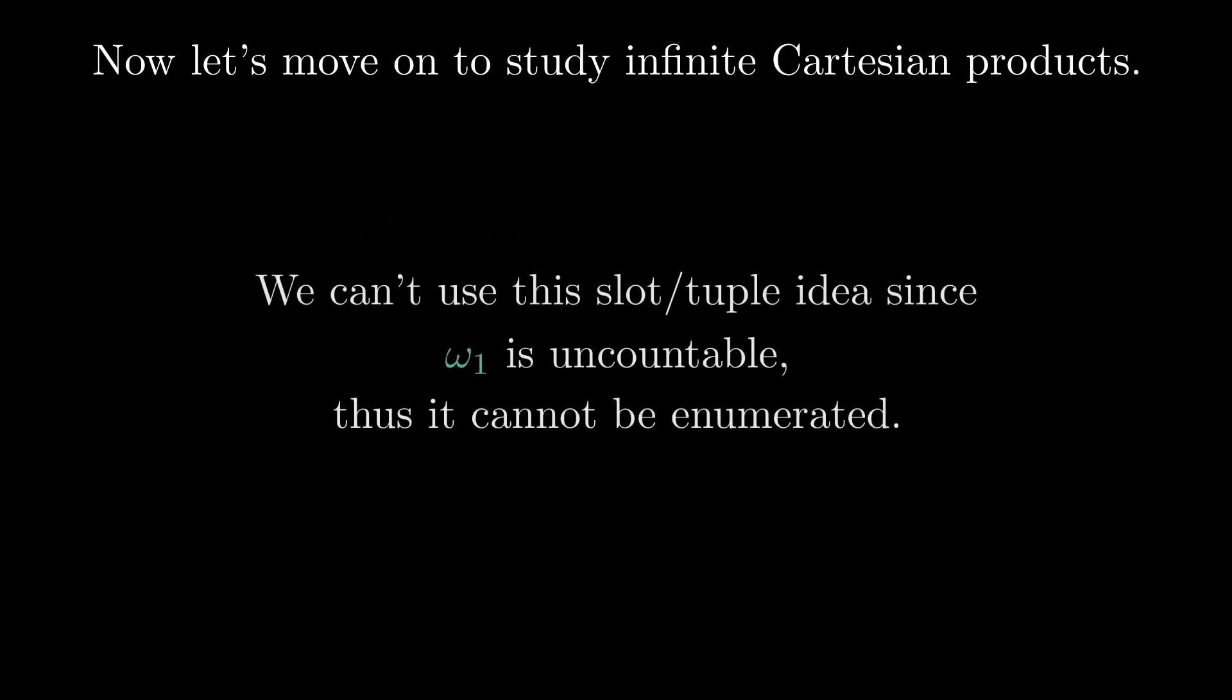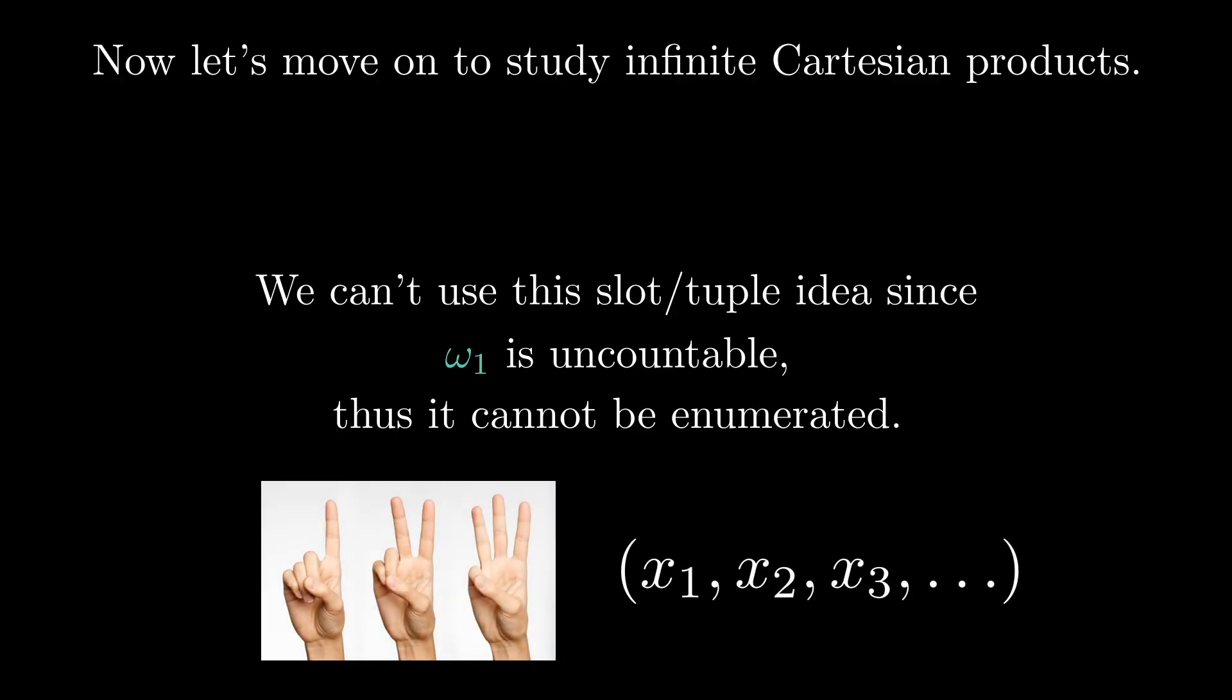Well, now we've got a problem. We can't use the slot or tuple idea because omega 1 is uncountable. So that means that it cannot be enumerated. Let's look at a different view that relates our tuples to functions.